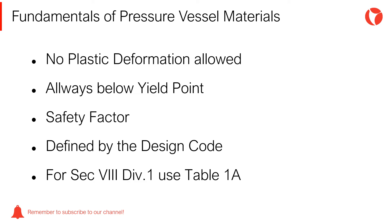The allowable stress for all accepted materials to be used in the design of pressure vessels, according to Section VIII Division 1, are found in Table 1A of Section II, Part D of the Boiler and Pressure Vessel Code.